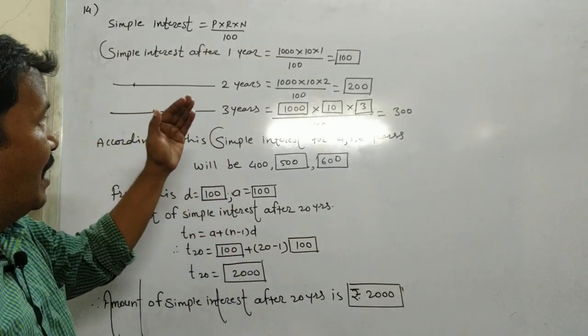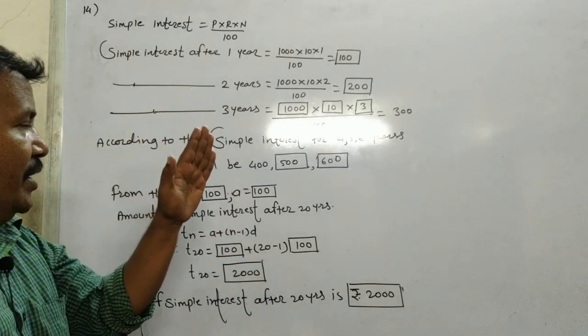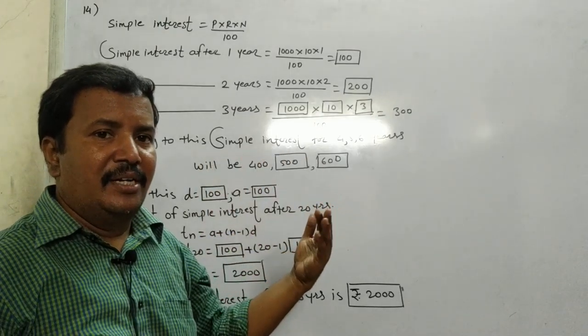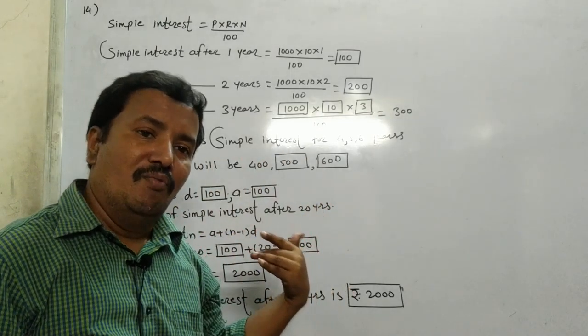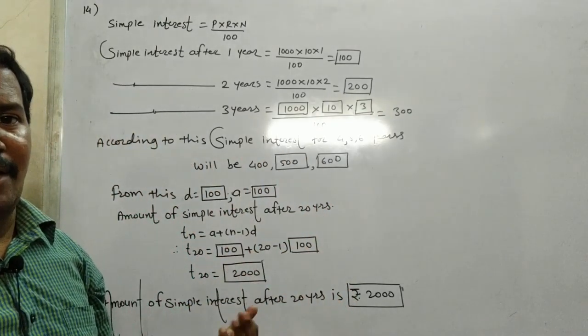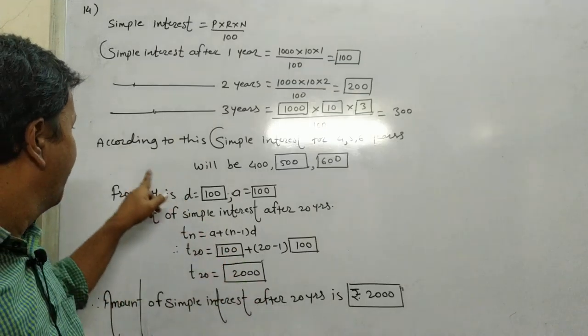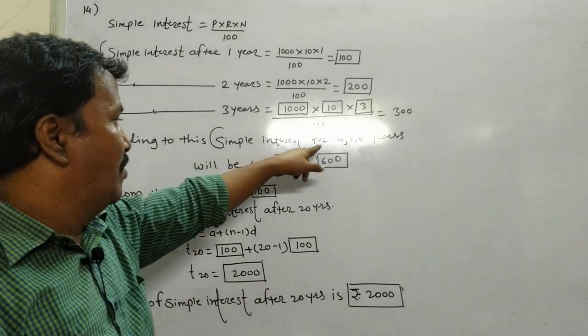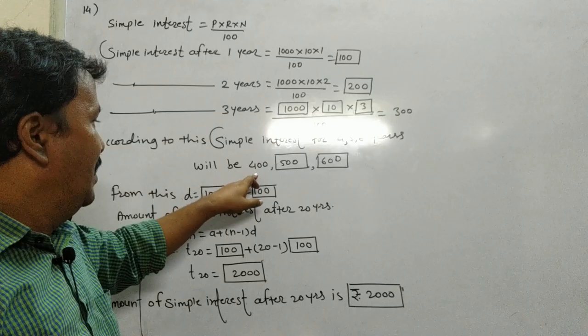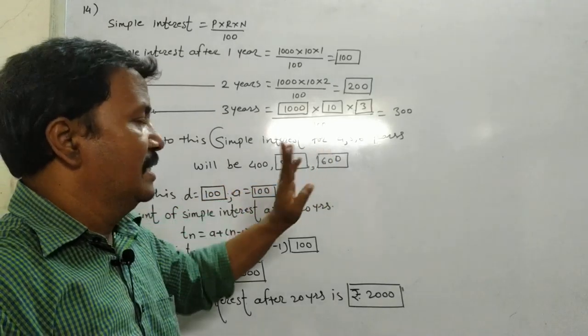After 1 year: 100. After 2 years: 200. After 3 years: 300. So after 4 years: 400, after 5 years: 500, after 6 years: 600. According to this simple interest, for 4, 5, 6 years, will be 400, 500, and 600.